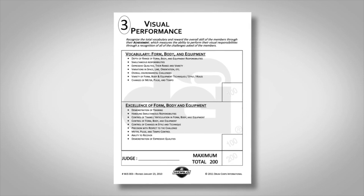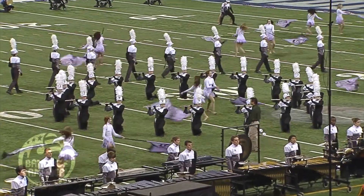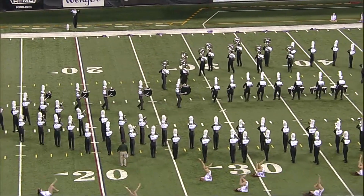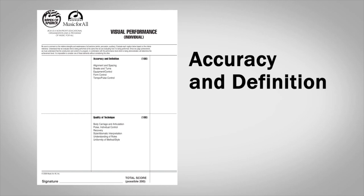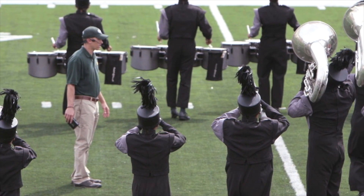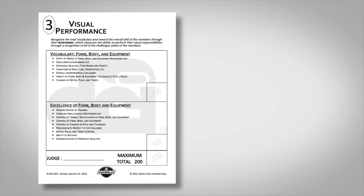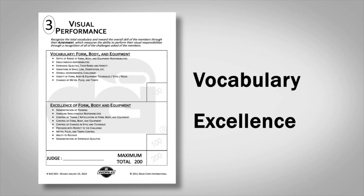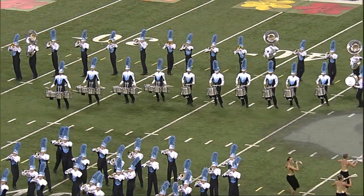We could just as easily use the Drum Corps International sheets as they have many things in common. Since this sheet is used by a single judge on the field with the students as they perform, it gives us a great starting point for the instruction on this DVD. The Bands of America Visual Performance Sheet has typically had two sub-captions: accuracy and definition, and then quality of technique. Judges examine the band in the context of a judgment within each sub-caption. Drum Corps International Visual Performance Sheets have a slightly different wording for the two sub-captions: vocabulary and then excellence. No matter what the wording, the purpose of the sheet is to reward the overall accomplishment or achievement of the performers.